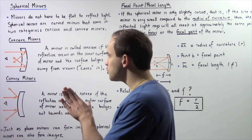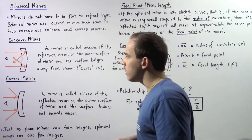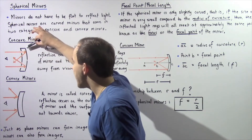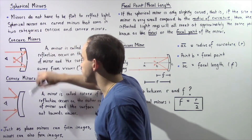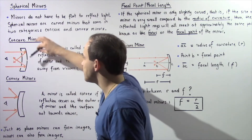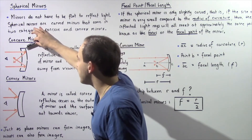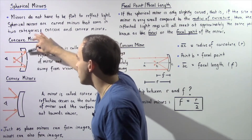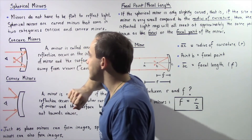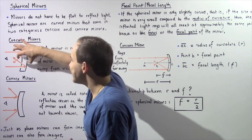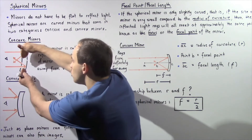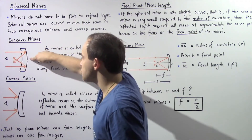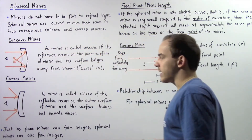Notice we have two surfaces of the mirror: the outer surface as well as the inner surface. For a concave mirror, reflection takes place on the inner surface of the mirror, and the center bulges away from the viewer as shown in the following diagram.